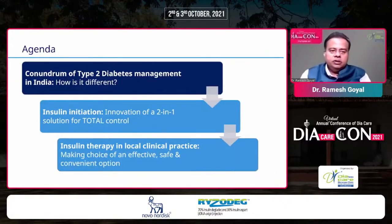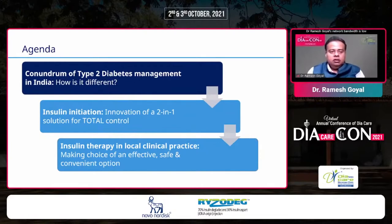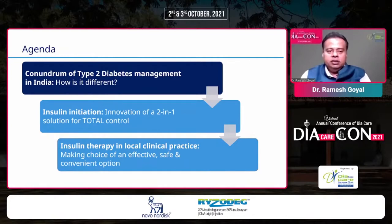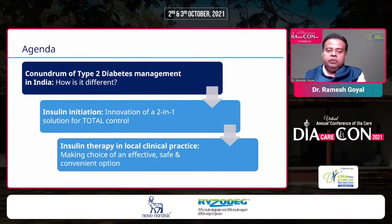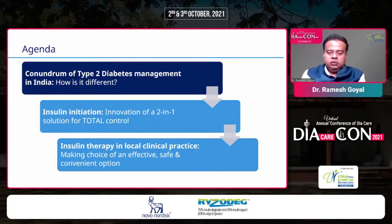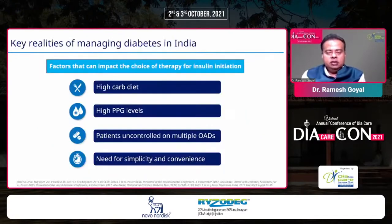This is the agenda of my presentation. I will start with the conundrum of type 2 diabetes management in India — the challenges we face and how it differs from the western population. Then I will talk about insulin initiation and the innovation of a two-in-one solution for total control, targeting fasting plasma glucose, post-prandial glucose, and HbA1c. Finally, insulin therapy in local clinical practice — making the choice of an effective, safe, and convenient option.